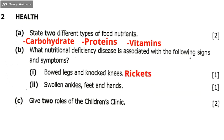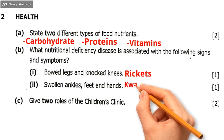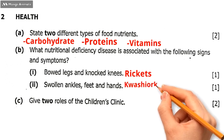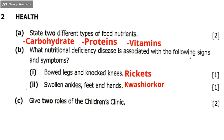Then question B, number two — swollen ankles, feet, and hands. That is kwashiorkor. So if your child has swollen ankles, feet, and hands, that means the child has kwashiorkor.